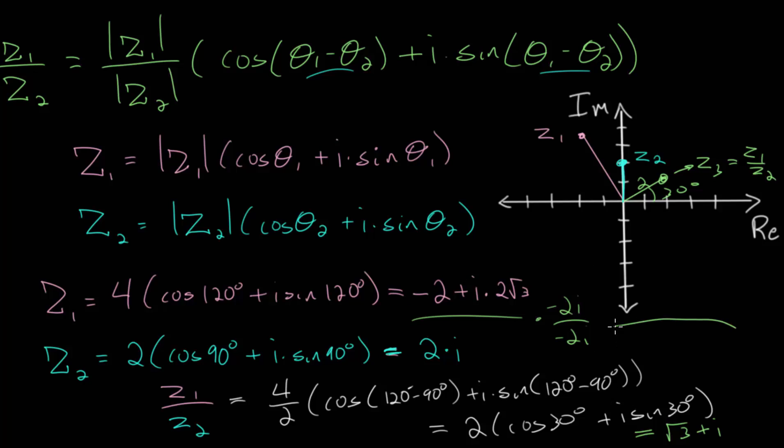When everything simplifies, we do get back the rectangular form for this quotient here. But the main idea is that when dividing numbers graphically, we have this nice interpretation. We divide their magnitudes and we subtract their angles.